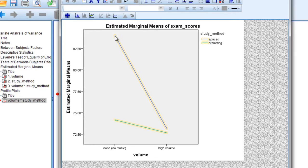Really what's going on here is the people who had spaced studying, as indicated by the blue line once again, and studied with no music, they did far better than everyone else on this exam. So that indicates a unique combination of the two factors, volume and study method. When these are combined, and in particular, when the no music level of volume is combined with the spaced method of studying, that resulted in substantially higher performance than all the other conditions.